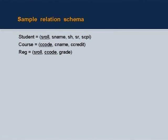Here is a sample relation schema. Student: S-role, S-name, S-hostel, S-room, S-CPI. Course: course code, C-code, course name, course credits. Reg: S-role, C-code, grade. This is the schema of the relation — it is metadata. The actual relation is those 5000 tuples in the student schema, 300 tuples in the course schema, and perhaps 30,000 tuples in the reg schema. That is the actual data. A relation is the actual data; a relation schema is metadata.